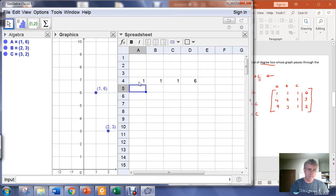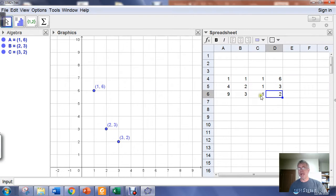Row 2 is 4, 2, 1, 3: 4 tab, 2 tab, 1 tab, 3, enter. The final row is 9 tab, 3 tab, 1 tab, 2. At that point I have my matrix typed into the spreadsheet view.